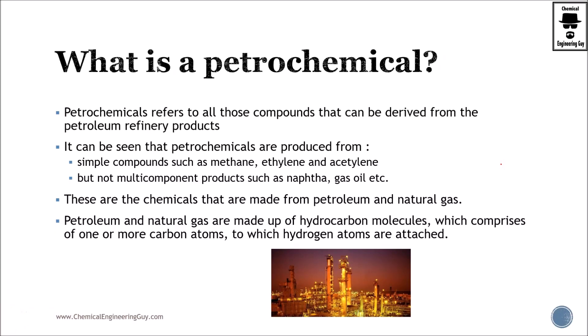Let us first define a petrochemical. You're probably wondering what's the difference between a petroleum-derived product, a petrochemical, or a petroleum refinery product. A petrochemical refers to all those components or compounds that can be derived from petroleum refinery products. In order to be a petrochemical, you must obtain it via petroleum refining, and these are simple compounds such as methane, ethylene, acetylene, and so on.